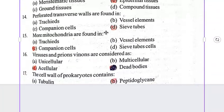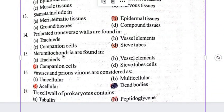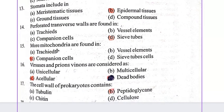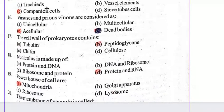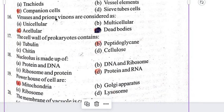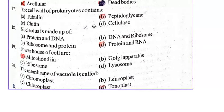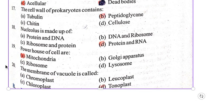More mitochondria are found in C. Companion cells. Viruses and prions are considered as C. Acellular. The cell wall of prokaryotes contains B. Peptidoglycan. Nucleus is made up of D. Protein and RNA.